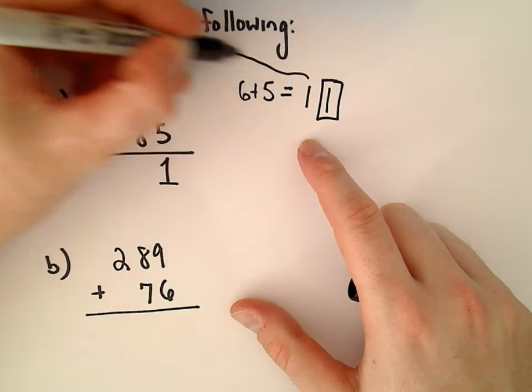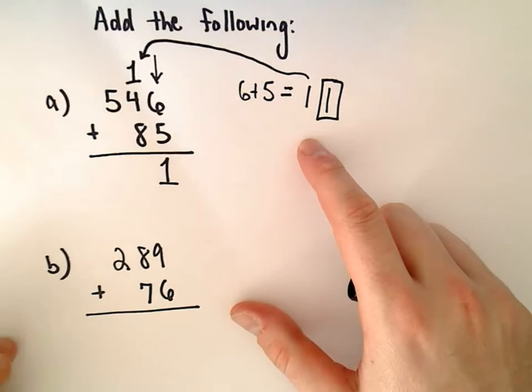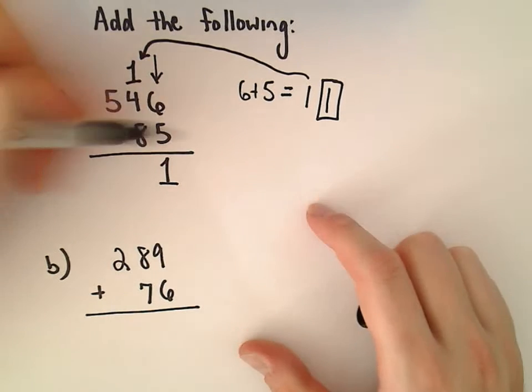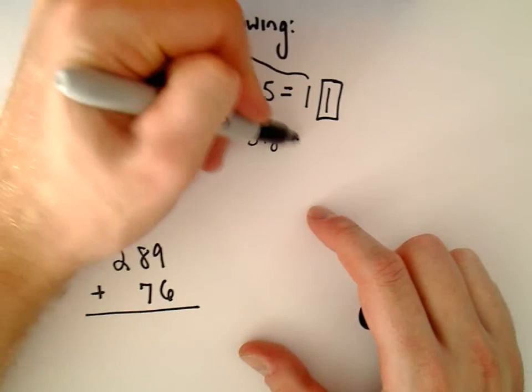So there's my 1 getting carried to the next column. Let's see, 1 plus 4, that's 5. 5 plus 8, well, that's going to give us 13.